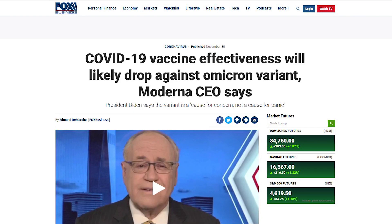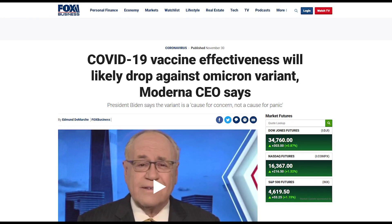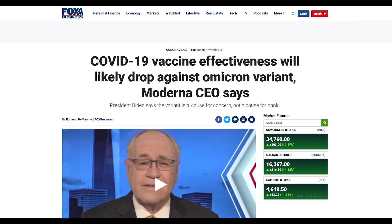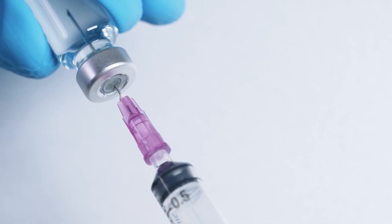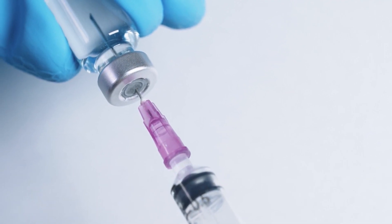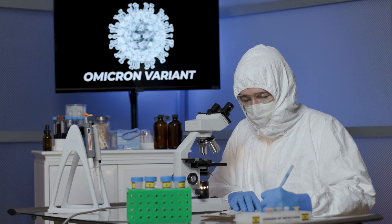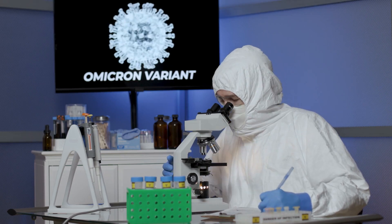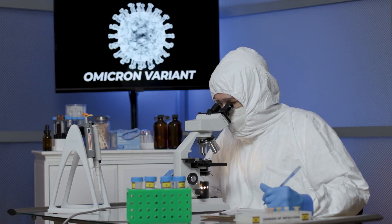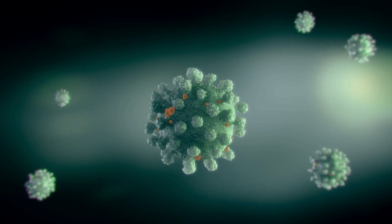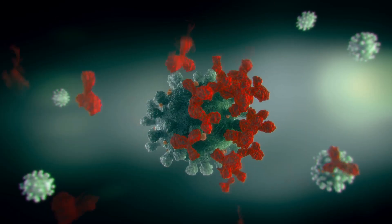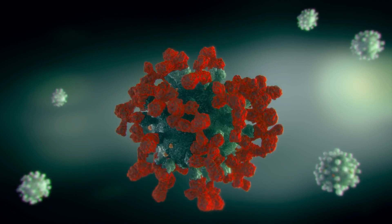According to Fox Business, Moderna CEO Stéphane Bancel said that the company's vaccine will likely be much less effective against Omicron, though how less effective it is isn't known yet. His prediction might be based on early studies showing numerous mutations in Omicron compared to Delta. These mutations might have changed the structure of the coronavirus, making antibodies from vaccines less potent.